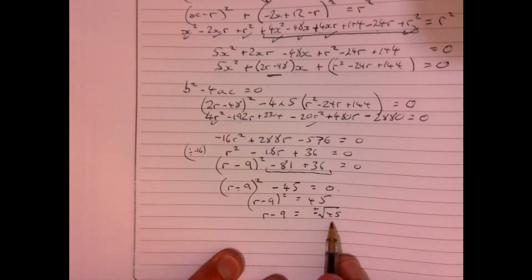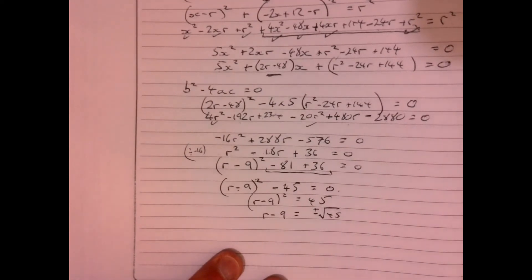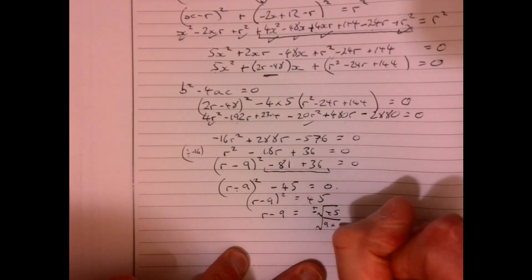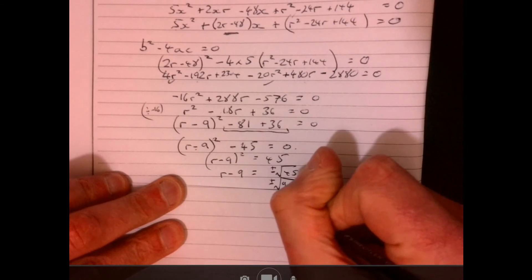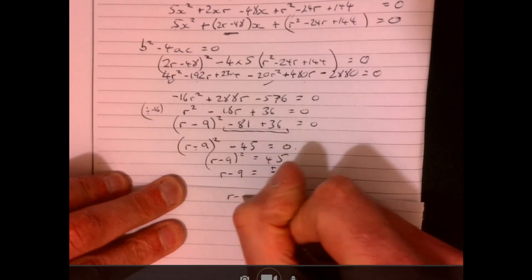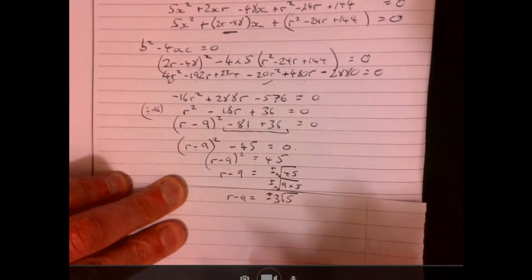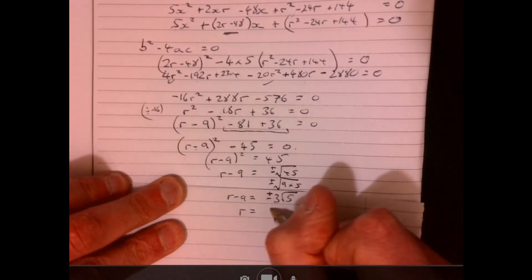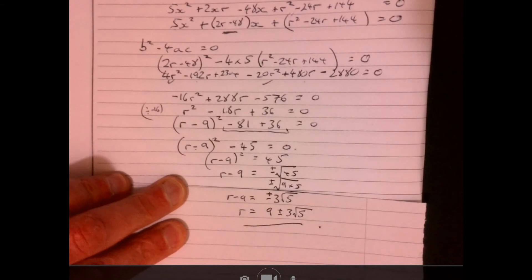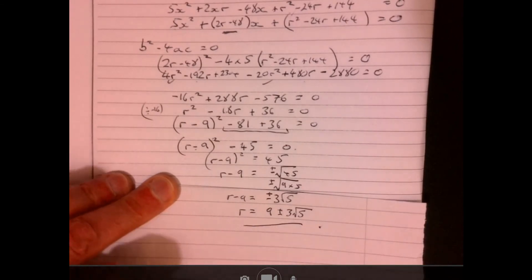r - 9 equals plus or minus square root of 45. Just having a little look at that, see if anything I can do with root 45. Ah, 9 times 5, wait a minute. Root 9, that's 3, so we can write 3 root 5. So it's plus or minus that. r equals 9 plus or minus 3 root 5. Really good question there, I like that one.